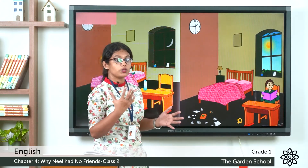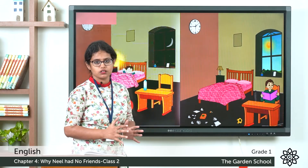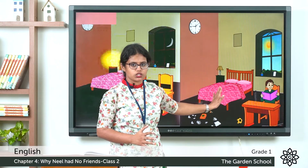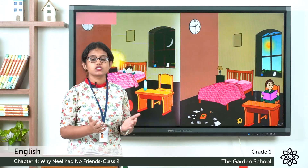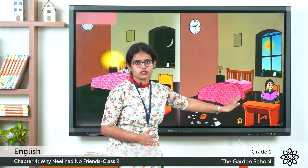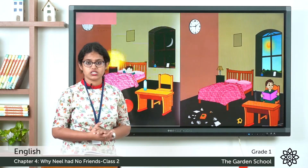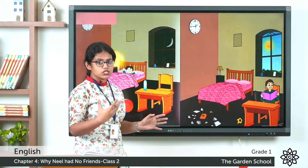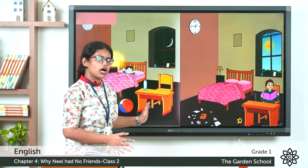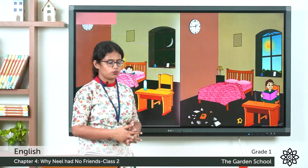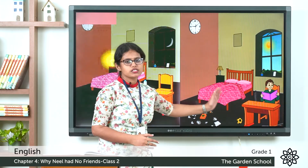Let us observe the pictures once more. You can see a little boy — what is he doing? He is sleeping. In the second picture you can see another boy — what is he doing? He is reading his book, so he is awake. Sleep and awake — another opposite word. Observing again, you can see two balls. Are they the same size? No. One is big and one is small. Big and small — another pair of opposites.